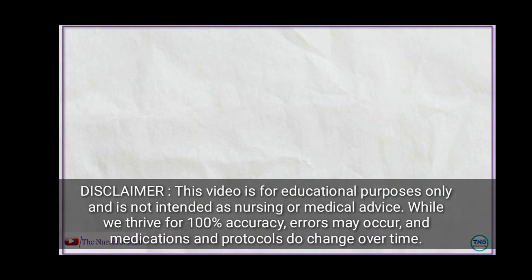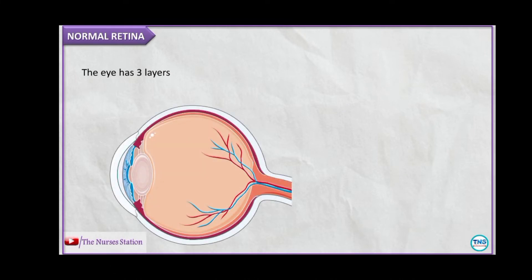In this video, we will talk about retinal detachment. Normally, the eye has three layers. The outermost is the sclera, the inner to it is the choroid, and the innermost layer of the eye is the retina. On this layer, the light is focused to form the image.